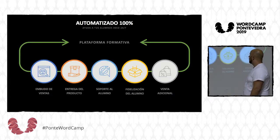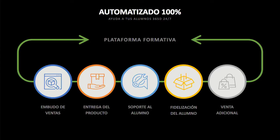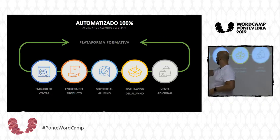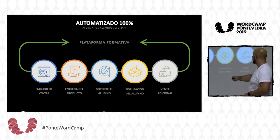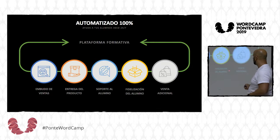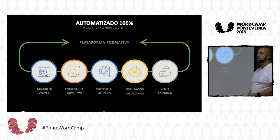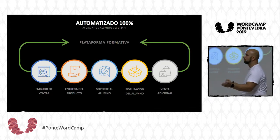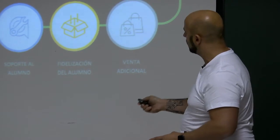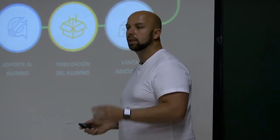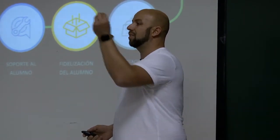La segunda parte: la filosofía. La automatización, 100%, ayuda a tus alumnos 365 días del año, 24-7. La plataforma formativa no es un sitio donde dejo el curso. Es todo un ecosistema. Y el ecosistema empieza por el embudo de ventas, sigue por la entrega del producto, soporte al alumno, fidelización del alumno y venta adicional. Ese es el proceso de una plataforma de cursos. No vendemos un producto y nos olvidamos. Esta última parte vuelve al inicio otra vez: es un bucle. En el momento que metes a una persona, tienes que entrar en ese bucle, porque eso te va a hacer generar más dinero con la misma persona.